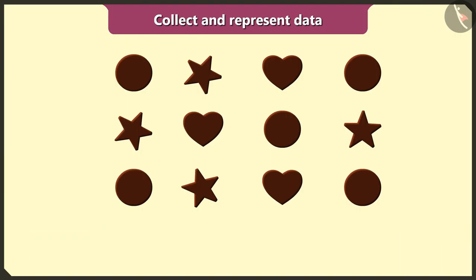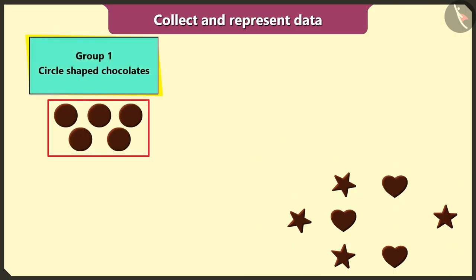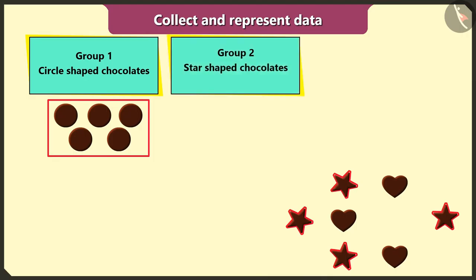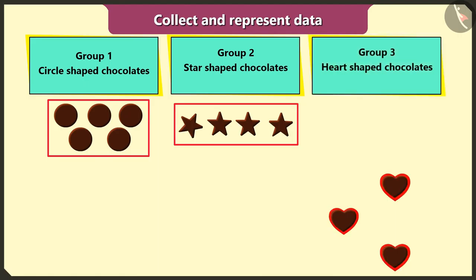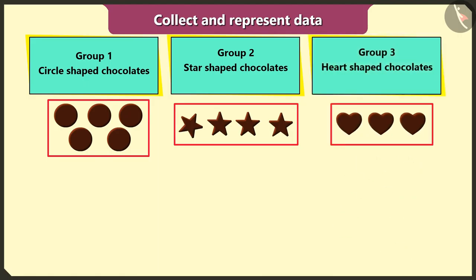So first of all, I will group chocolates based on their shapes. First group of circle shaped chocolates. Second group is star shaped chocolates. And the third group is of heart shaped chocolates.